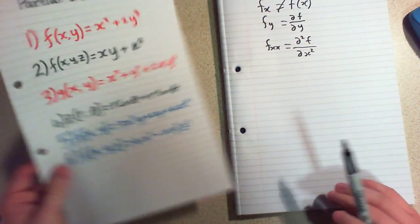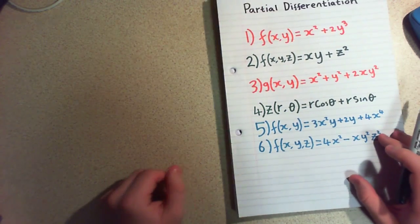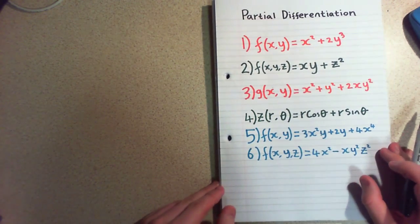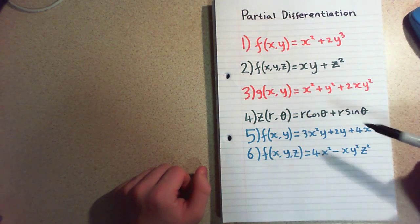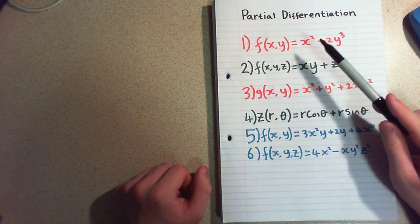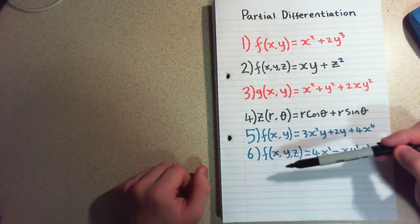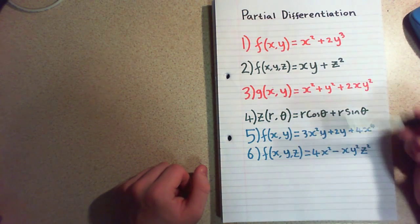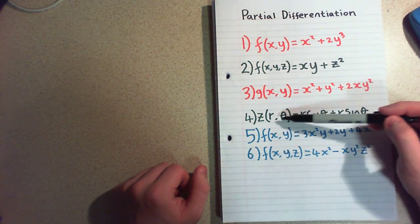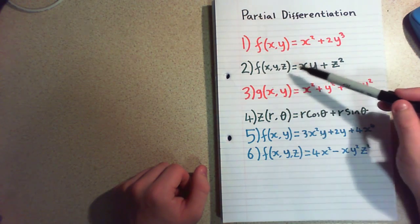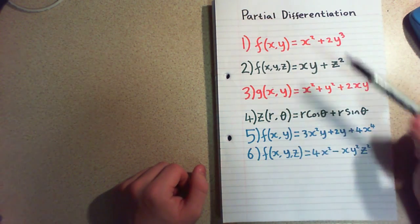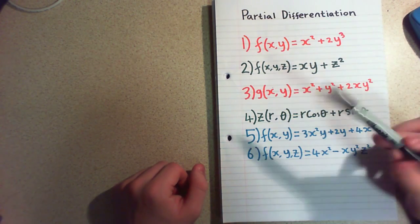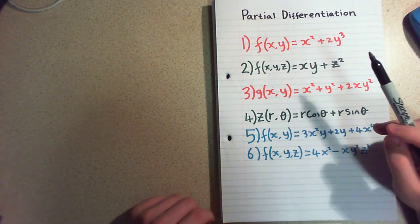Anyway, we're going to go through some problems here. I find this is the best way to learn partial differentiations just to go through the problems and get used to how the rules work. And you can see that they don't have to be f of anything, they can be g of, z of. It doesn't have to be x and y, it could be r and theta like here. You can have more than two, you can have as many as you want. You can have quite complicated things going in. And we'll just see how we deal with all of this as we go through.